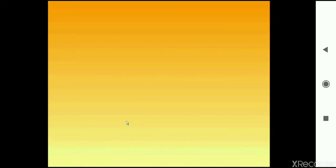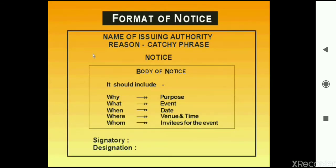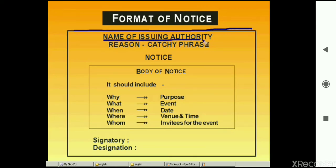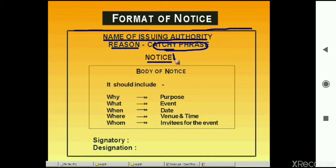I'll give you a format of a notice to show how it will look. This is a simple format. A box has been drawn and the notice is put up in it. The first line is the name of the issuing authority — the name of the organization, or where school is concerned, the name of the school. The second important point is an eye-catching phrase or caption. And then the third line is the word N-O-T-I-C-E. These three should be in bold and capital letters inside the box.